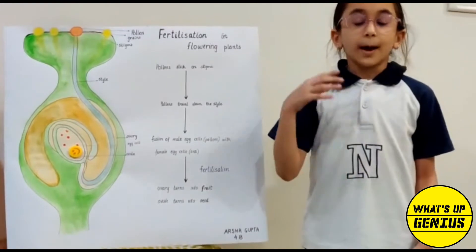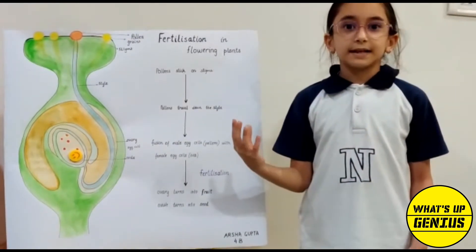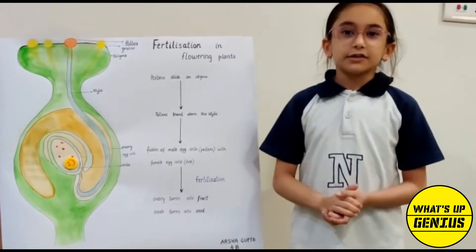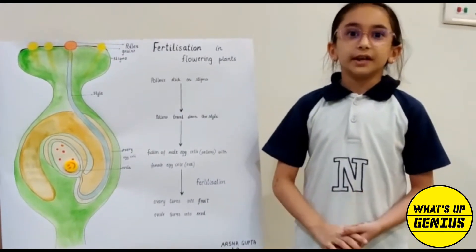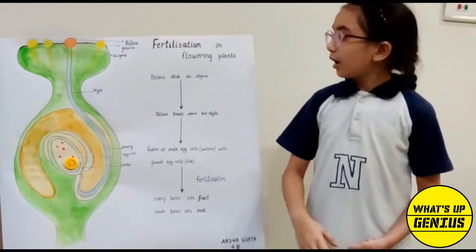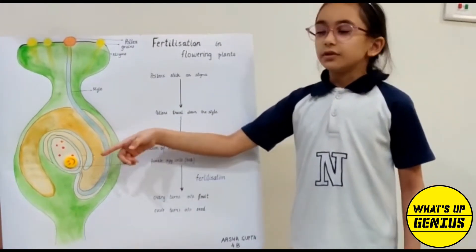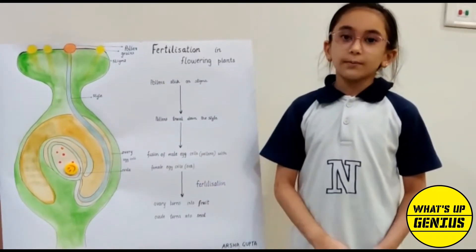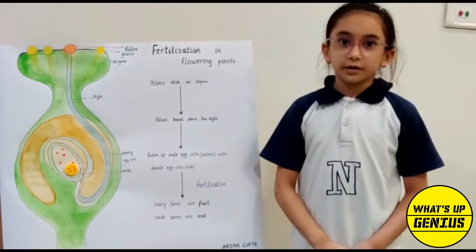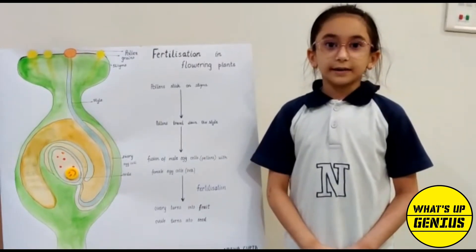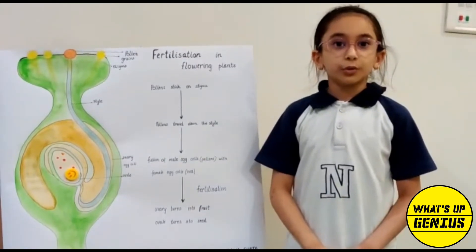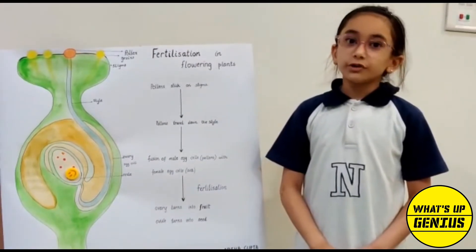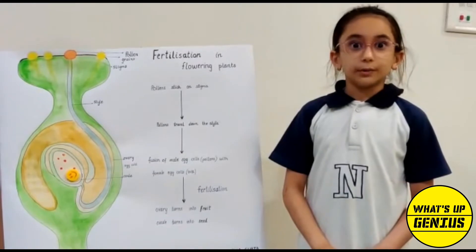The fusion of male egg cells with female egg cells is called fertilization. After fertilization, the fertilized ovary forms a seed which contains a food store and embryo, which further grows into a plant.